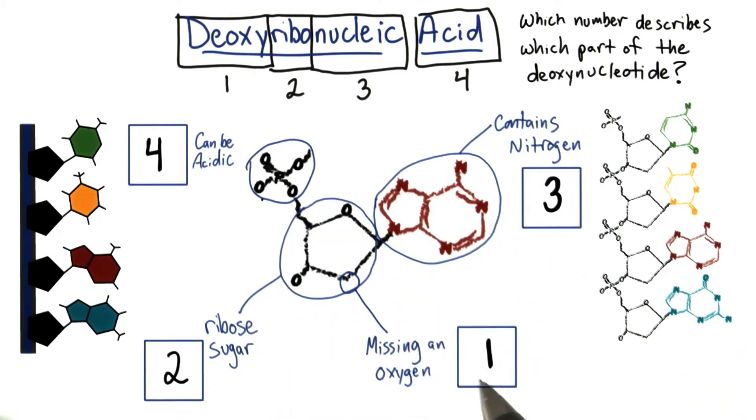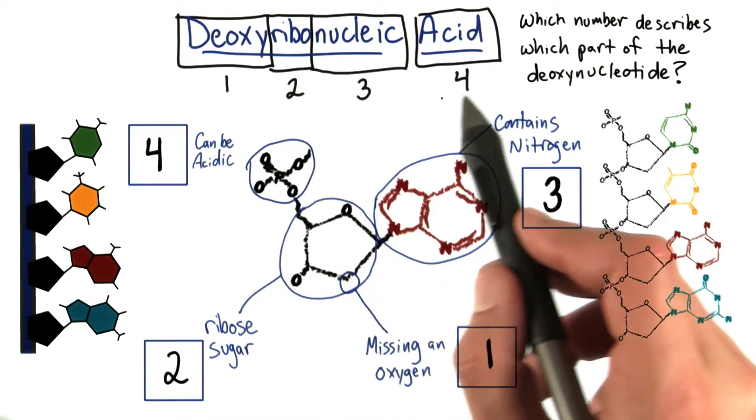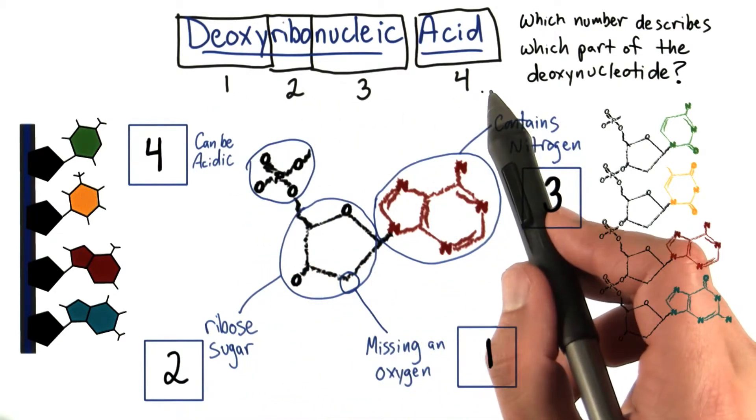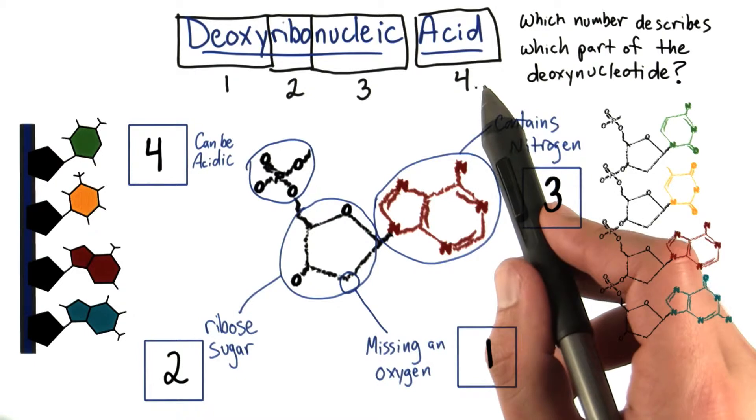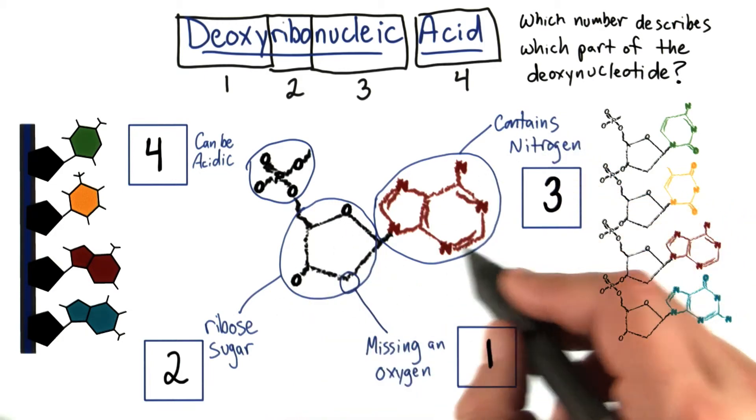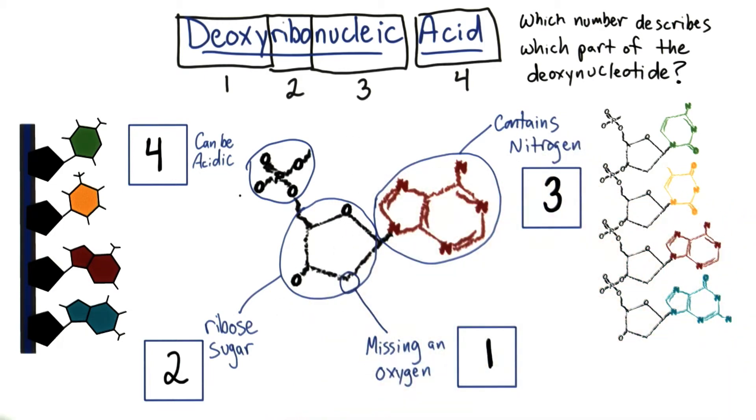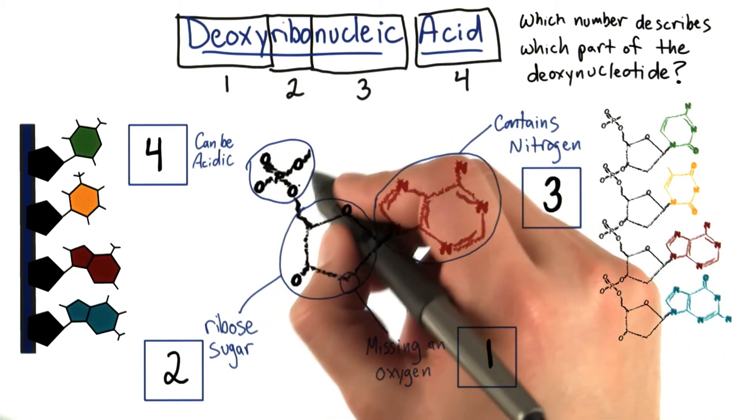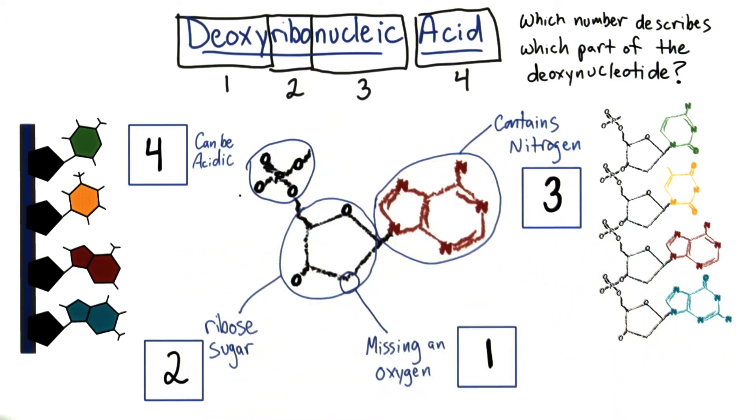So you can see that the name deoxyribonucleic acid, which is the long form for the abbreviation DNA, actually is just describing the chemistry of missing an oxygen, being part of a ribose sugar, containing a nitrogenous base that can be found in the nucleus, and also containing a group that can be acidic under certain conditions.